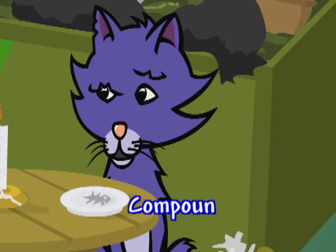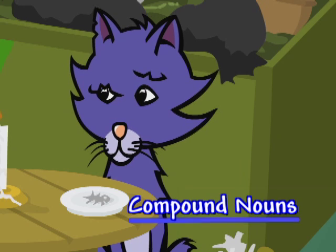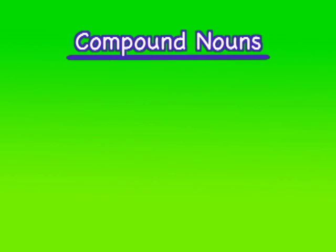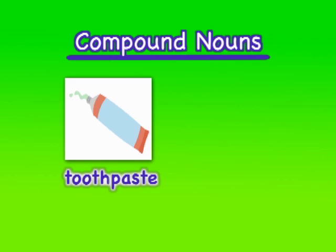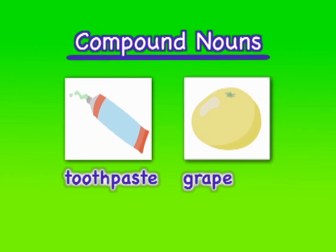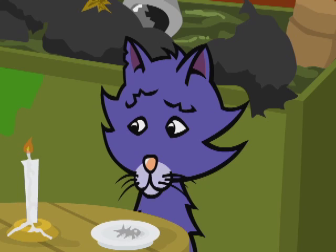Popcorn is a compound noun. Compound nouns are made up of two or more words, like toothpaste or grapefruit. Let's find something better to eat.